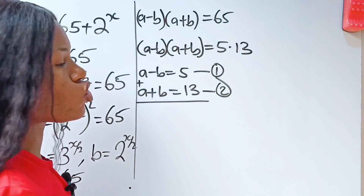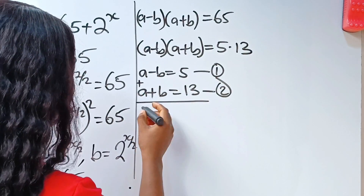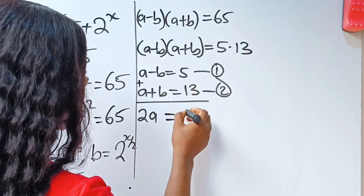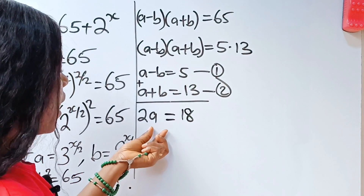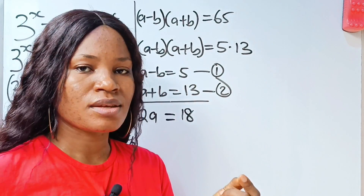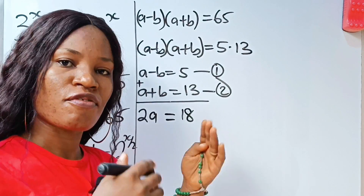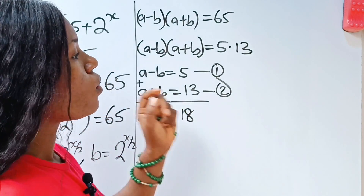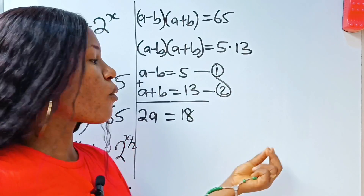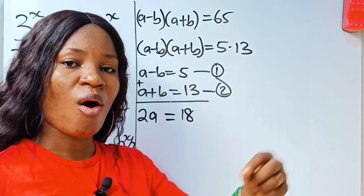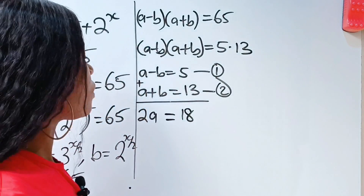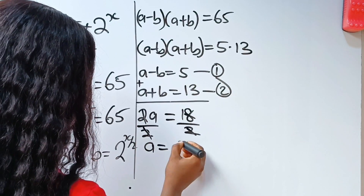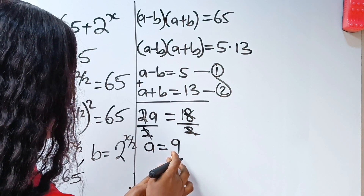Now let's add equation 1 to equation 2. a plus a will give us 2a, and minus b plus b is 0, so this is equal to 5 plus 13 which is 18. So to get the value of a — recall we are not looking for a, we are looking for x, but we can get x from a — we divide by 2, and we have that a is equal to 9.